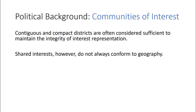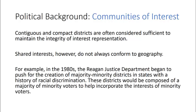Our last value to consider is communities of interest. Contiguous and compact districts are often considered sufficient to maintain the integrity of interest representation, but shared interests don't always conform to geography. For example, in the 1980s the Reagan Justice Department began to push for the creation of majority-minority districts in states with a history of racial discrimination. These districts would be comprised of a majority of minority voters to help incorporate their interests and ensure minority voters would always have a representative at the legislative body.